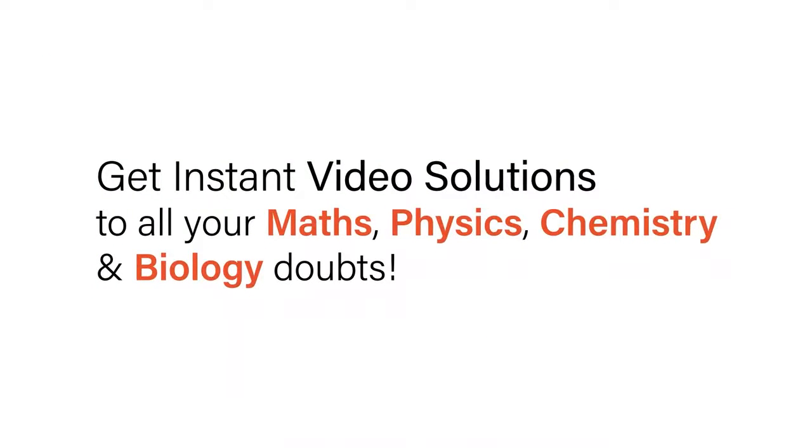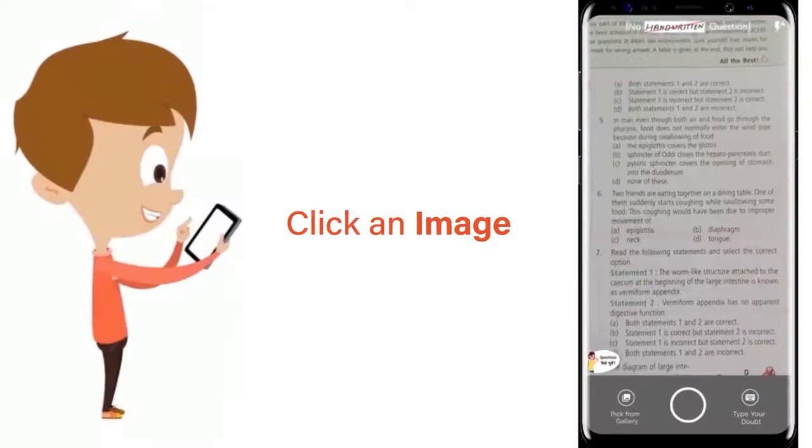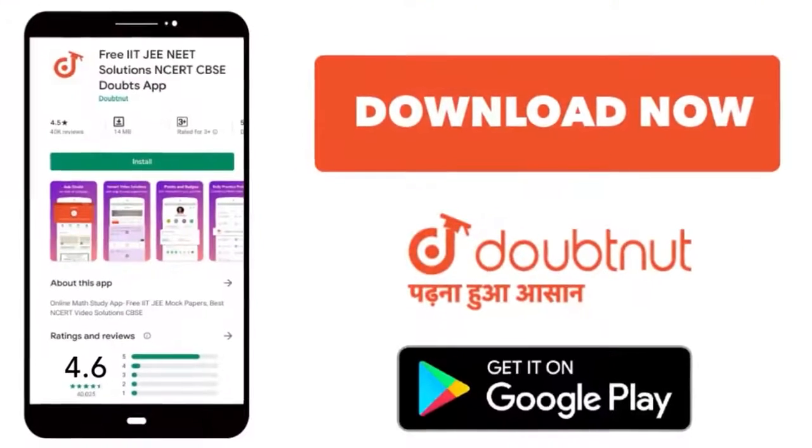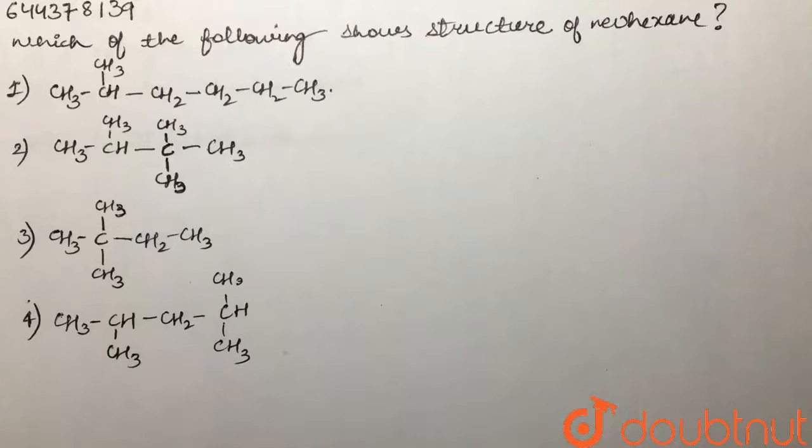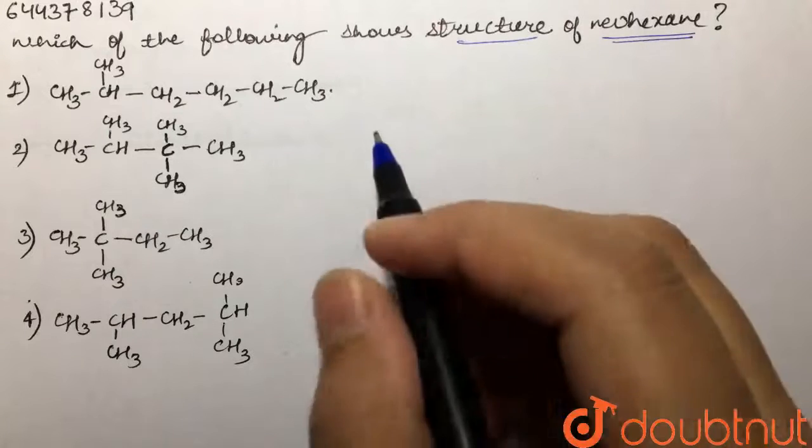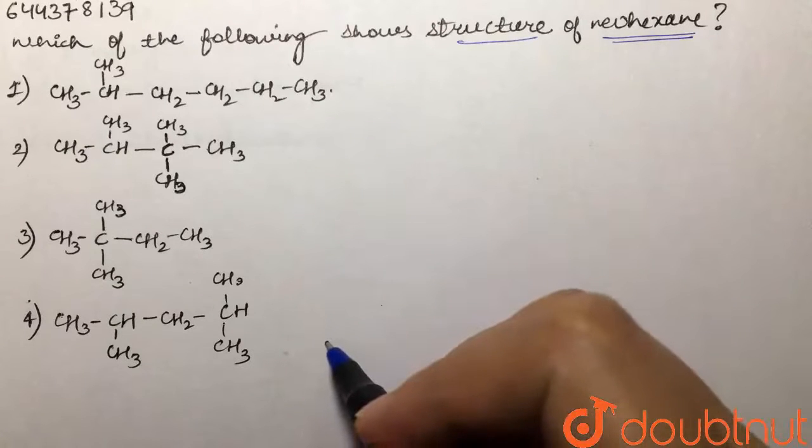With Doubtnet, get instant video solutions to all your math, physics, chemistry, and biology doubts. Just click the image of the question, crop it, and get an instant video solution. Download Doubtnet app today. Our question is which of the following shows the structure of neohexane. We are given these four structures and are supposed to tell which one shows the structure of neohexane.